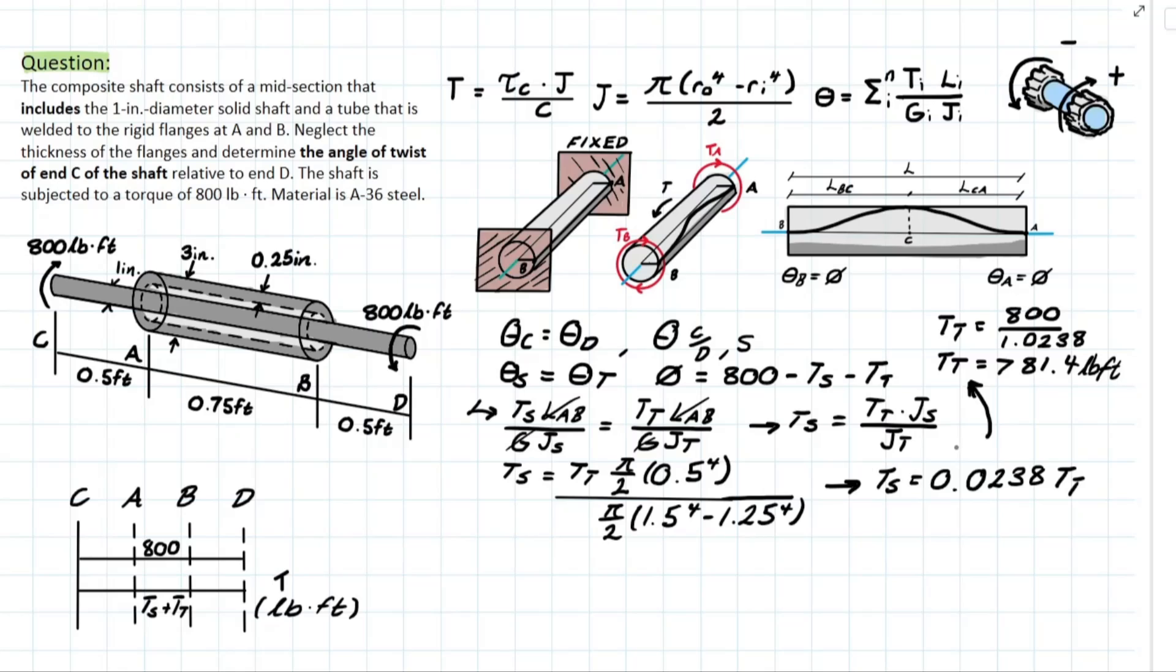Now what can we do with this information? Now we can actually go ahead and start solving for TS because we know that based on this equilibrium equation, it has to be the takeaway from 800. So TS is going to equal either 800 minus this, or you can plug this right back into this equation, where TS is going to be equal to 18.6 pounds per foot.